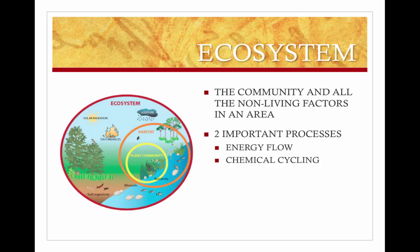An ecosystem is the community, or all the organisms, and all the abiotic factors in an area. Energy flow and chemical cycling are two important processes that we're going to look at in this unit.